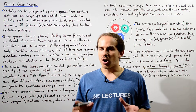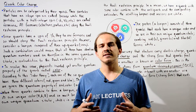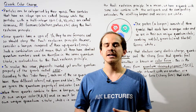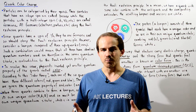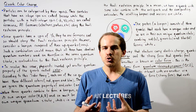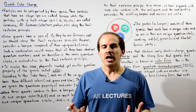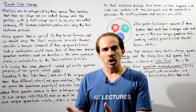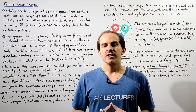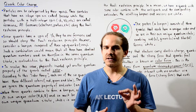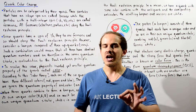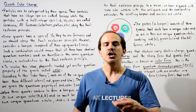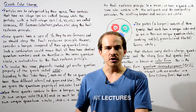All the different types of particles that exist in nature can also be categorized by their spin value. So there are two types of categories. There are the bosons, and boson particles are those particles that have a spin value that equals an integer value — for example, one, two, three, and so forth.